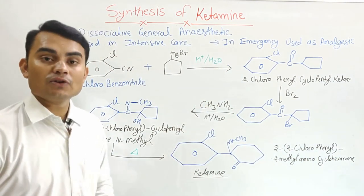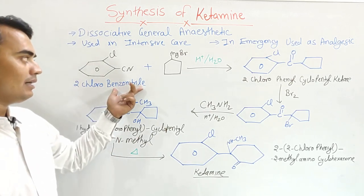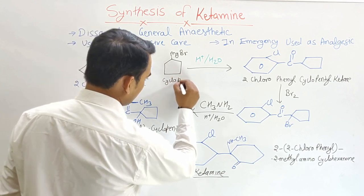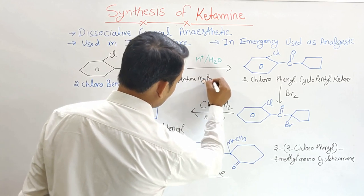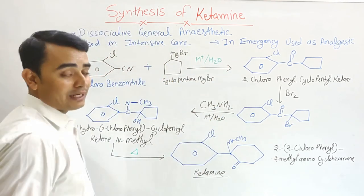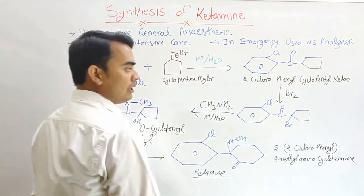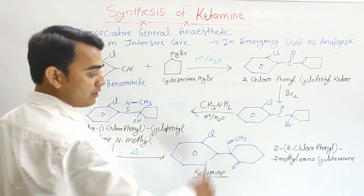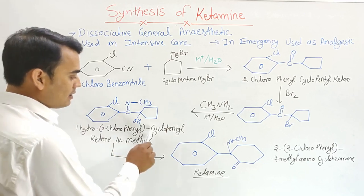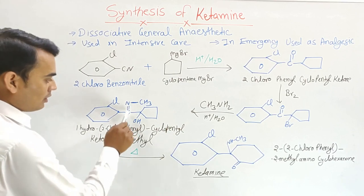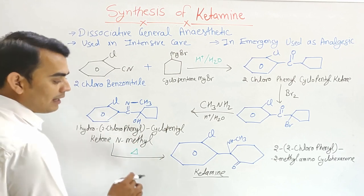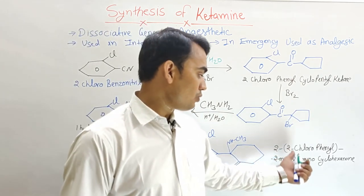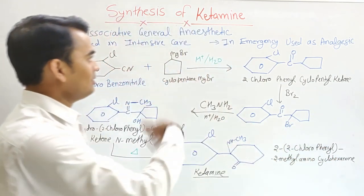This is the synthesis of ketamine — very easy. Quick revision: 2-chlorobenzonitrile reacts with cyclopentyl magnesium bromide in the presence of H⁺ and water to form 2-chlorophenyl cyclopentyl ketone. Reaction with bromine attaches bromine to the ketone carbon. Reaction with CH3NH2 in the presence of H⁺ and water forms 1-hydroxy-2-chlorophenyl cyclopentyl ketone N-methyl. On heating at higher temperature, it becomes the 6-membered unsaturated ring — ketamine — with the IUPAC name 2-(2-chlorophenyl)-2-(methylamino)cyclohexanone.